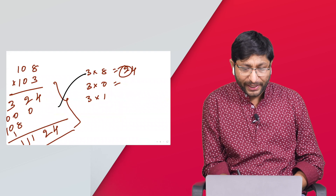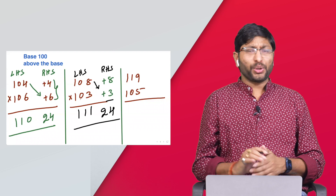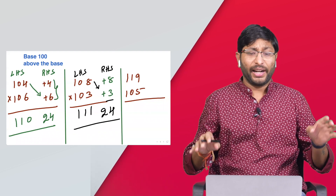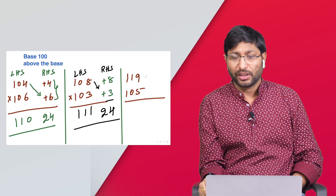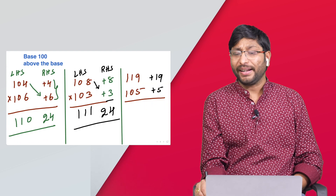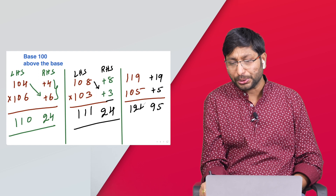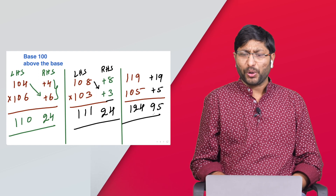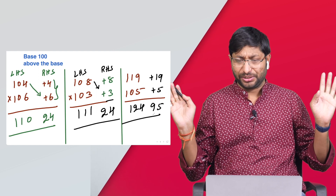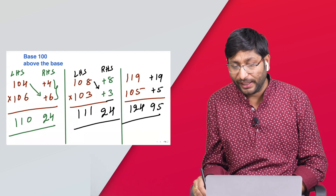You don't even need to write out RHS and LHS steps — you can directly write the answer. One more example: 119 × 105. Differences are +19 and +5. Right-hand side: 19 × 5 = 95. Left-hand side: 119 + 5 = 124. Answer: 12495. Simple! One step, direct calculation.